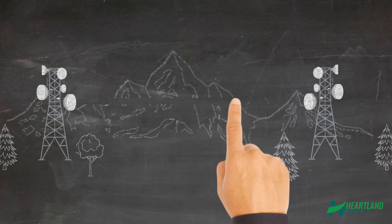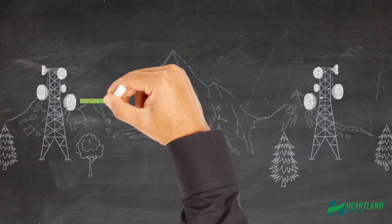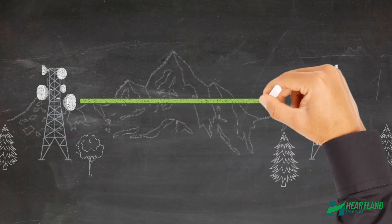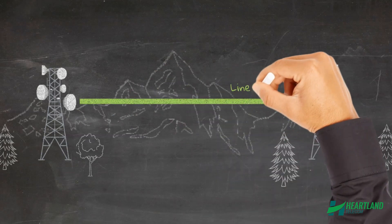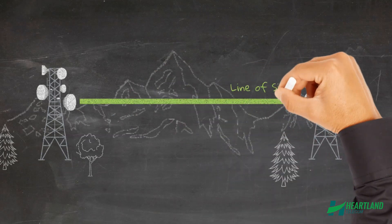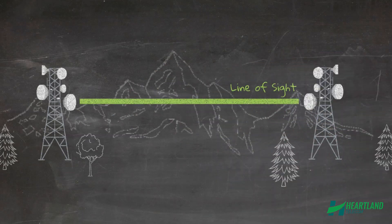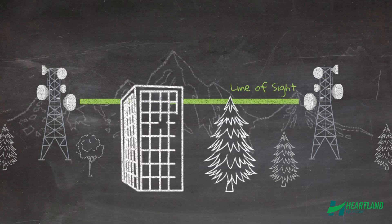As you know, communication towers use microwave antennas to communicate using a narrow focus frequency beam. A clear path line-of-sight verification is critical for point-to-point links, so it's important to make sure there are no obstructions along its path.